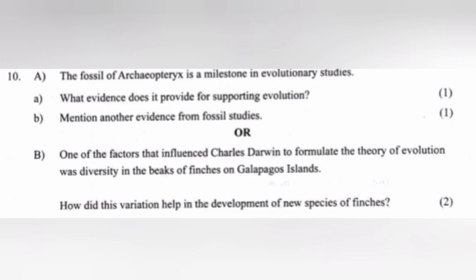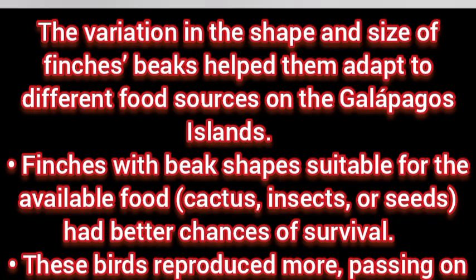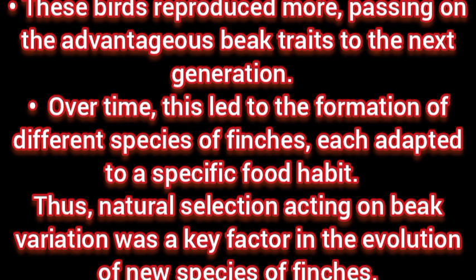Part B: One of the factors that influenced Charles Darwin to formulate the theory of evolution was diversity in the beaks of finches on the Galapagos Islands. How did this variation help in the development of new species of finches? Answer: The variation in the shape and size of finches' beaks helped them adapt to different food sources on the Galapagos Islands. Finches with beak shapes suitable for the available food had better chances of survival. These birds reproduced more, passing on the advantageous beak trait to the next generation. Over time, this led to the formation of different species of finches, each adapted to a specific food habit. Thus, natural selection acting on beak variation was a key factor in the evolution of new species of finches.